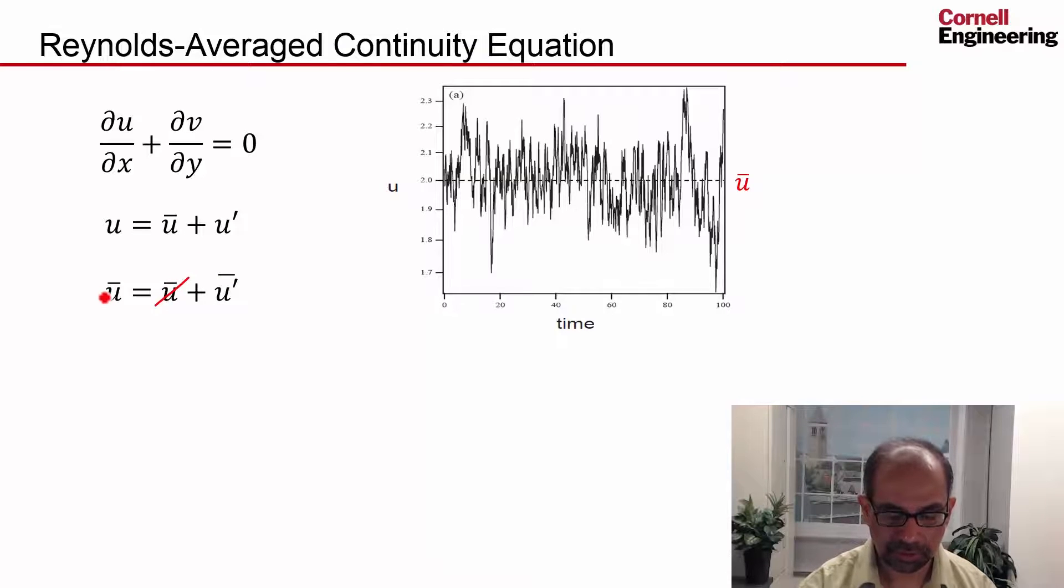And I can knock off this and this, which means that the average of the fluctuations in the u-velocity is zero. Similarly, the average of the fluctuations in the v-velocity is zero.